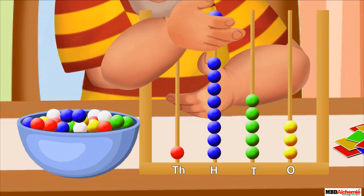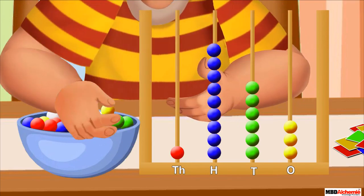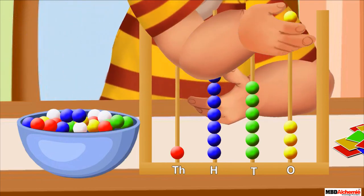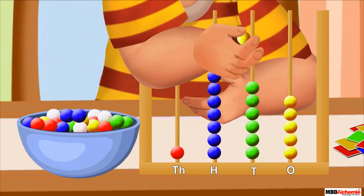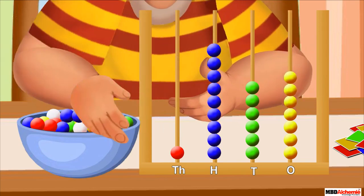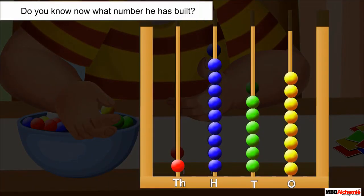He added one bead to the hundreds spike, one bead to the tens spike, and five beads to the ones spike. Do you know now what number he has built?